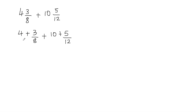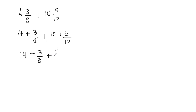Now what we're going to do is combine the whole numbers. So that means we'll add the whole number with the whole number, and then add the fractional part separately. Let's add the whole numbers first: 4 plus 10 is equal to 14. And then we can write 3 eighths plus 5 twelfths.